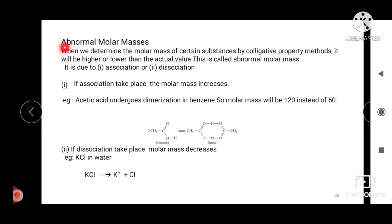What is abnormal molecular mass? When we determine the molar mass of certain substances by colligative property method, it will be higher or lower than the actual value. This is called abnormal molar mass or molecular mass, and it is due to association or dissociation.